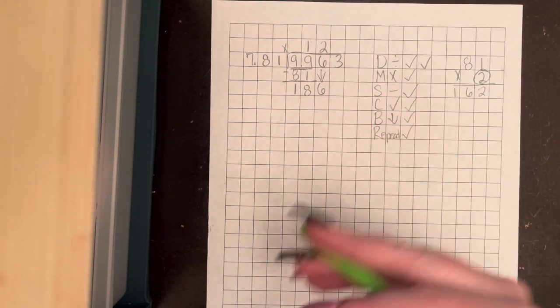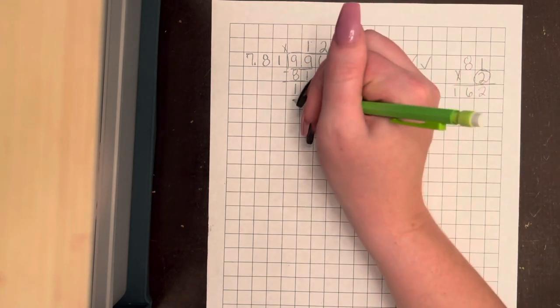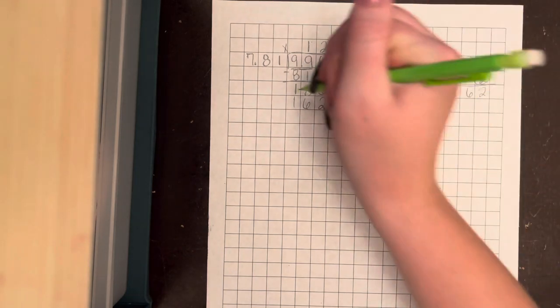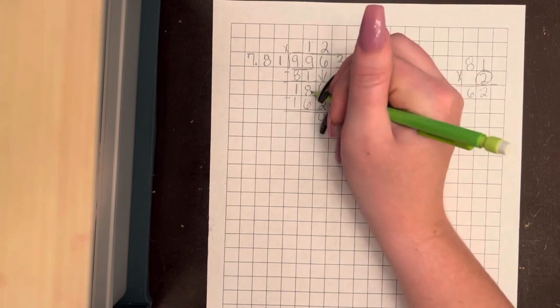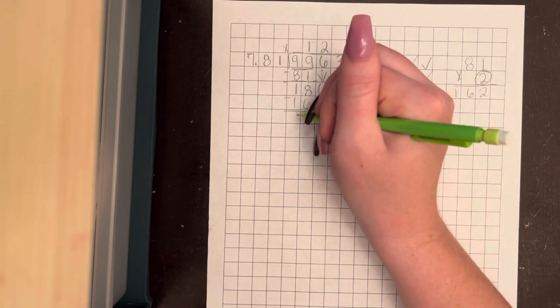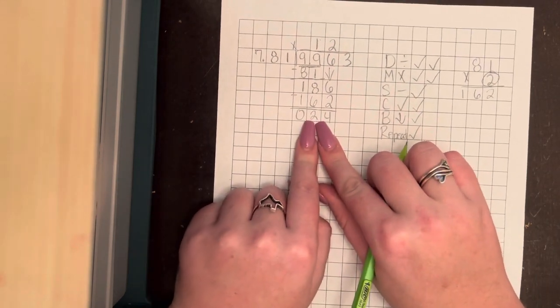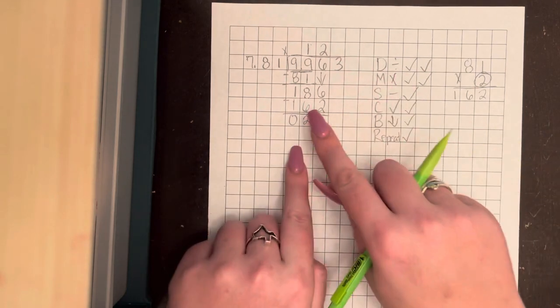Now we're multiplying. We do the last number we put. So 2 times 81. We already have it here. It's 162. Now we subtract. 6 minus 2 is 4. 8 minus 6 is 2. 1 minus 1 is 0. A quick check could be to make sure that this number, after you subtract, is not bigger than this number. If it is, you did something wrong. Ours is not.